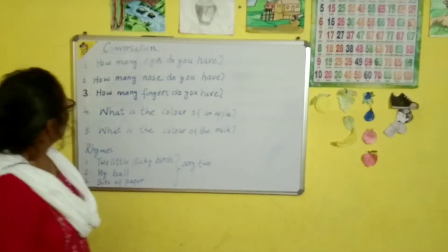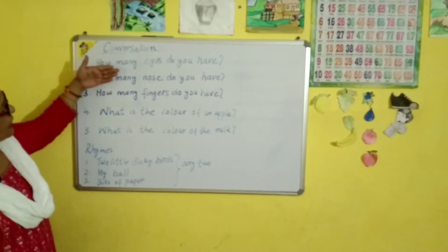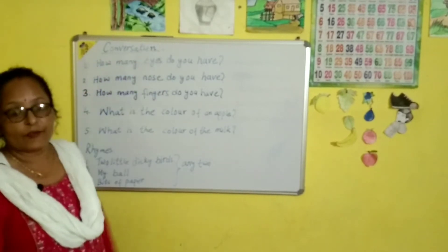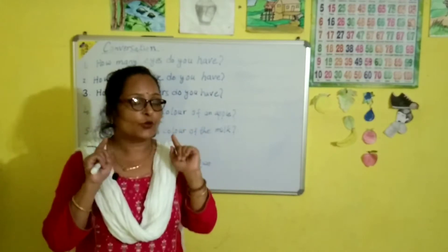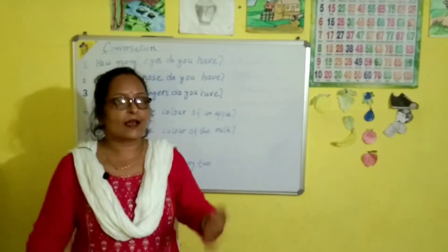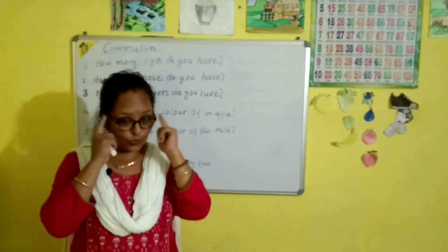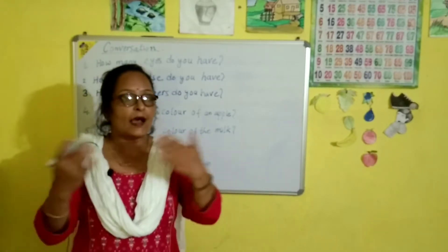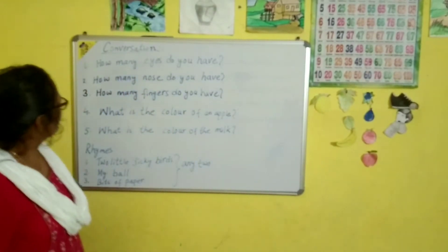Number one: How many eyes do you have? The answer is: I have two eyes. Say — I have two eyes.